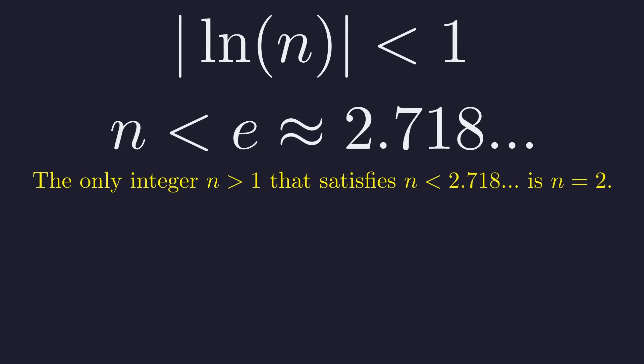And here is the stunning conclusion. Since n must be an integer, the only value of n for which the simple integer solution is stable is n equals 2. For n equals 3, 4, and all other integers, the tower will always converge to a different, non-integer value.